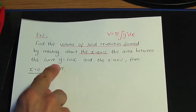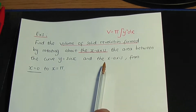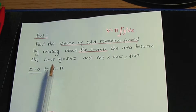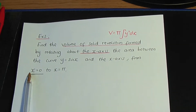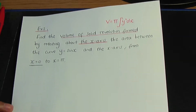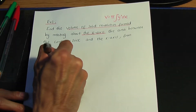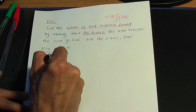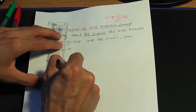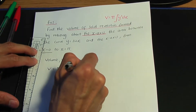The area between the curve y equals sine x and the x-axis from x equals zero to x equals pi — so these are the limits of our integral. So volume V, in this case, is pi into the integral of y squared dx.